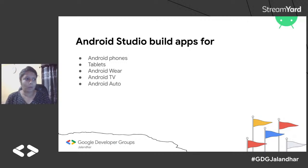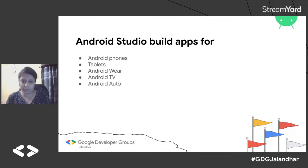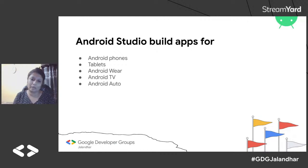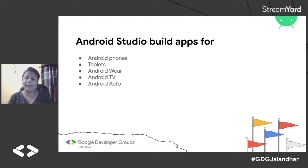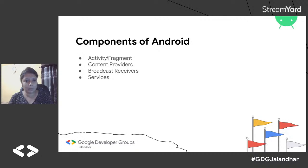With Android we can make many types of applications: mobile applications, wearable apps for smartwatches and other wearables like spectacles, applications for tablets, applications for smart TVs and Android-specific TVs, and finally Android Auto — in many cars there are inbuilt devices and you can make applications for those purposes as well.